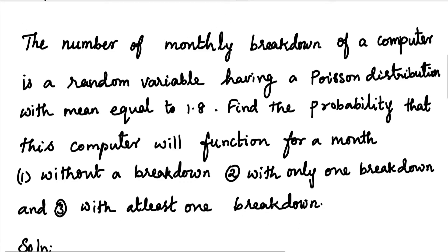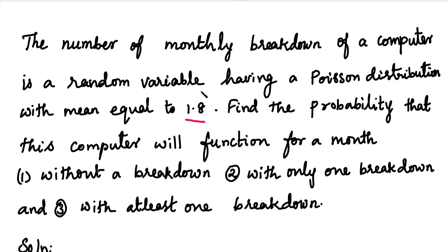The number of monthly breakdowns of a computer is 1.8 — that is, the average mean value. Lambda is equal to 1.8.